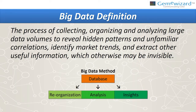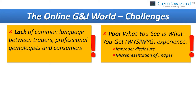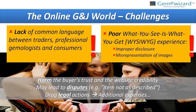What are the challenges in our world? The gem and jewelry world lacks a common language. There is no one language to describe color and other attributes of the stone, and there is an online pool where what you see is what you get experience, which causes improper disclosure, misrepresentation, et cetera. This harms consumer trust, causes disputes and issues, and there can be legal actions.